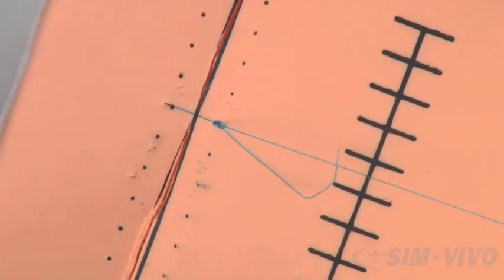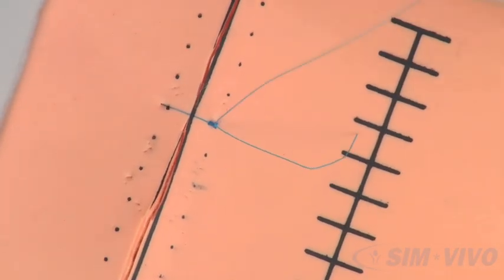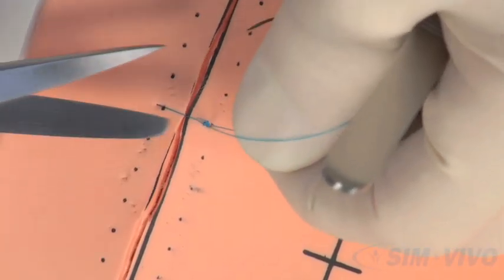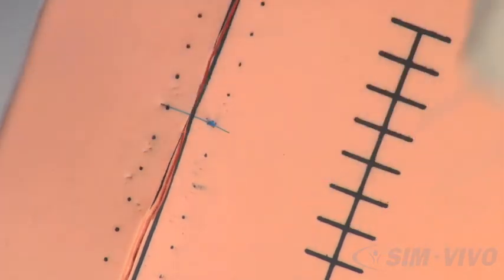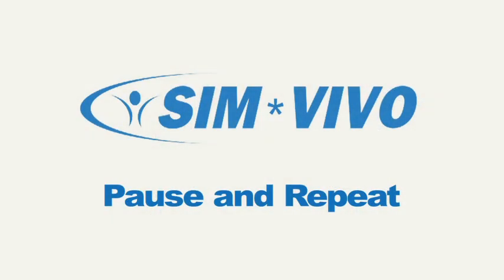When you are done, bring the knot outside the wound and cut it with the scissors. Now, practice this ten times before moving on to the next exercise.